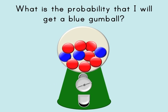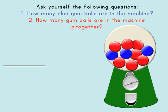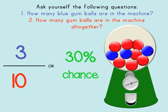Let's look at another example. What is the probability that I will get a blue gumball? Ask yourself the following questions. First, how many blue gumballs do you see in the machine? I see 3. How many gumballs are in the machine altogether? I count 10 — 7 red ones and 3 blue ones. This means the chances of getting a blue gumball are 3 out of 10, or a 30% chance.